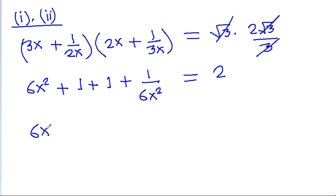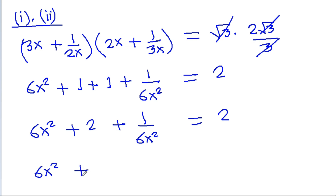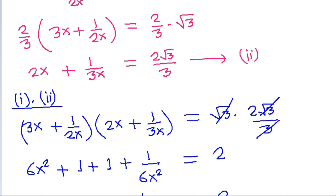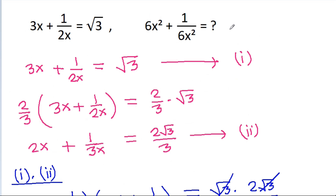So we have 6x square plus 2 plus 1 by 6x square is equal to 2. Therefore, 6x square plus 1 by 6x square is equal to 2 minus 2, which is 0.